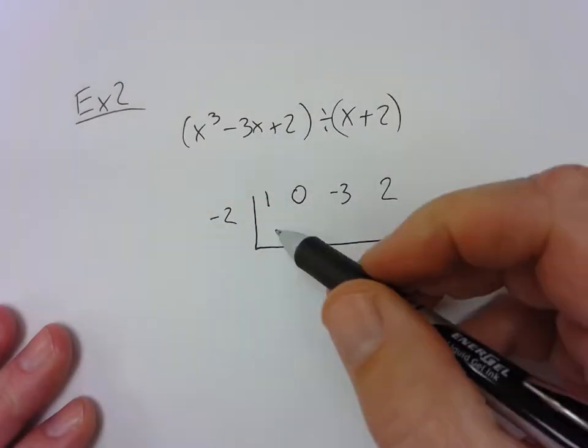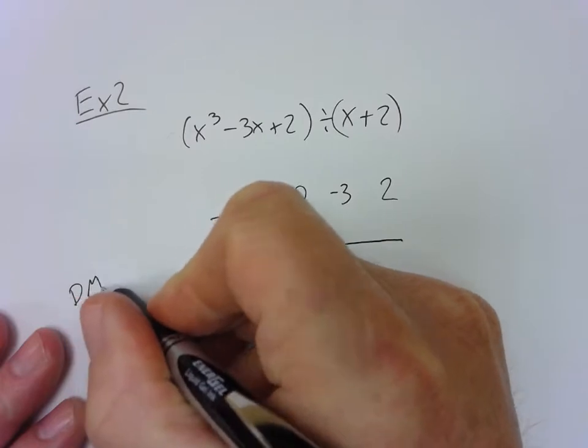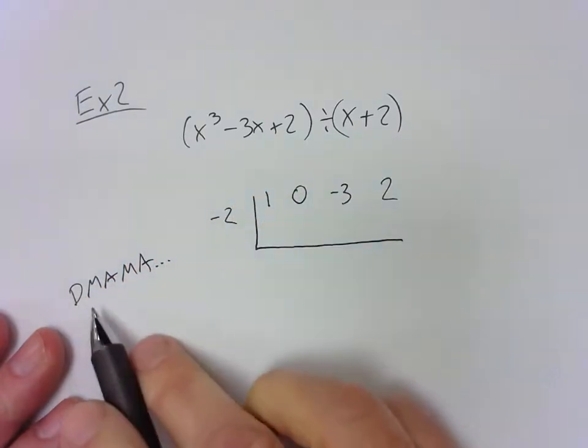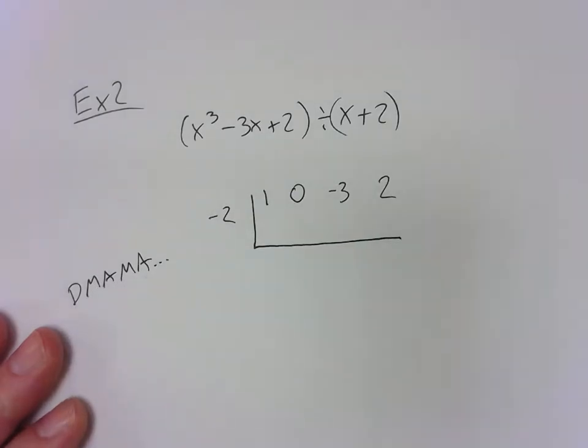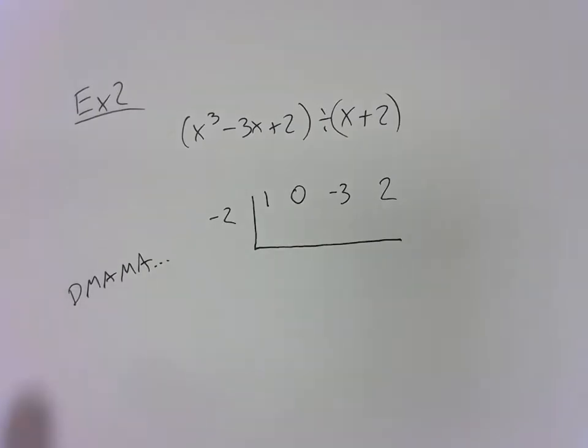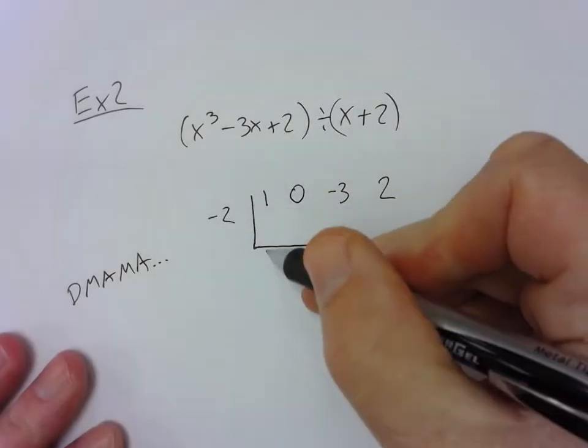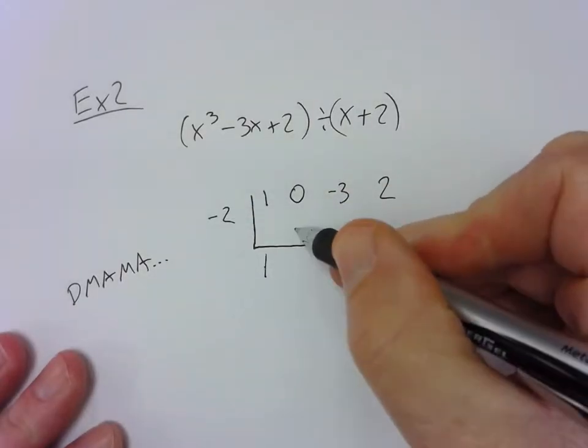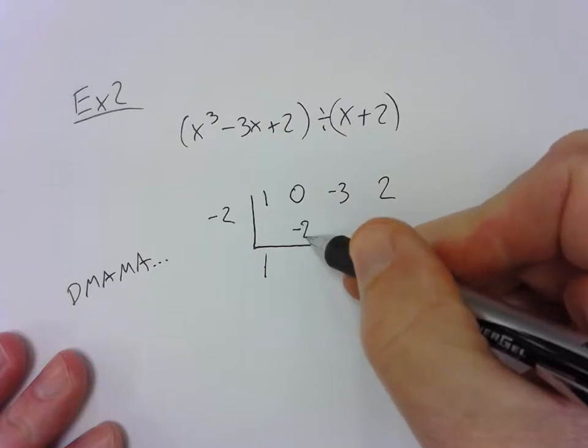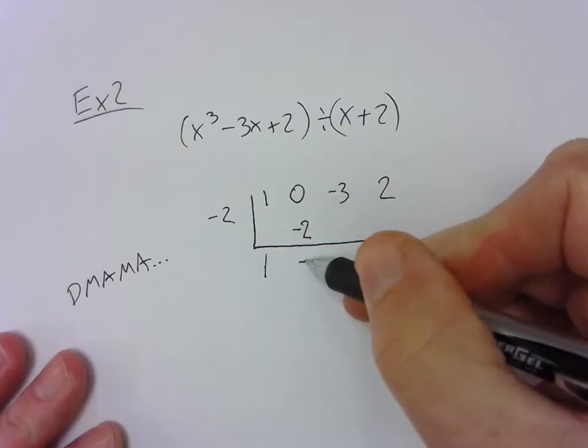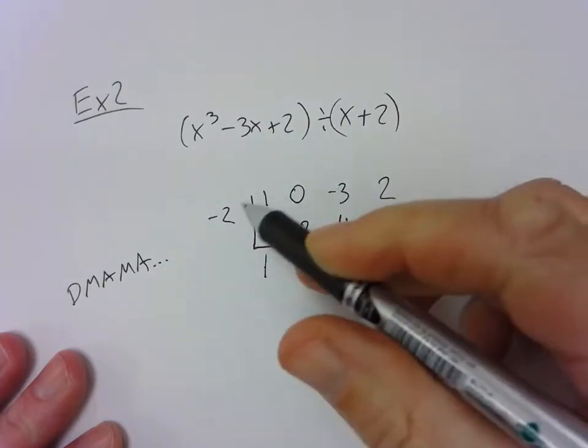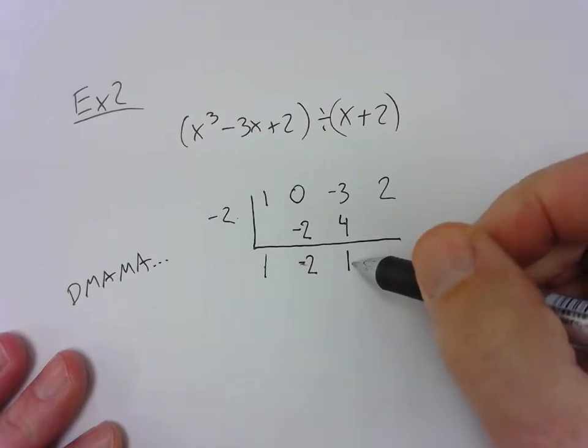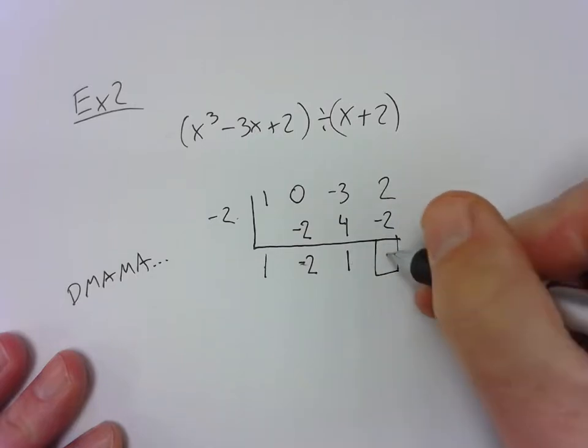So here's the deal. It's DMAMA. D-M-A-M-A dot dot dot. So you just keep doing this until you're done. You drop, you multiply, you add, you multiply, you add, you multiply, you add. That's what the three dots mean. If there's more parts, you just keep mamaing. So we drop the 1 down. We multiply these two together. We put the answer underneath here. Negative 2. We add these two together. Negative 2. We multiply. We get 4. We add these two together. We get 1. We multiply here. We get negative 2. We box in the last number to separate it. That is the remainder.